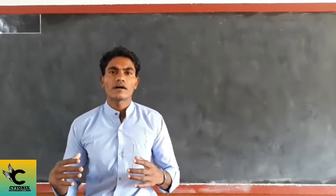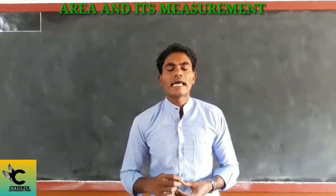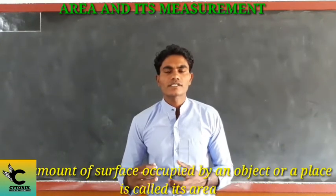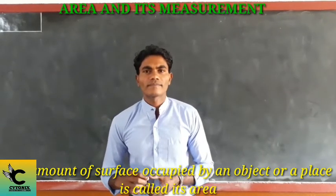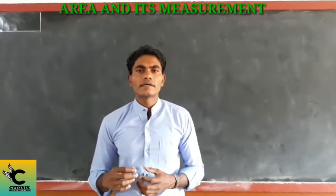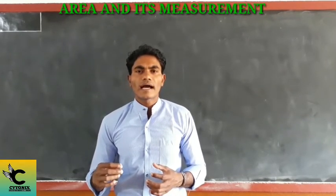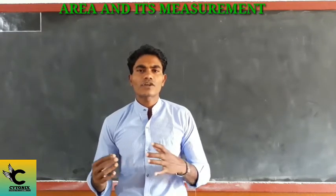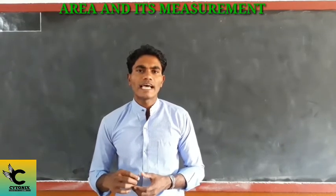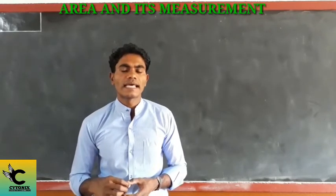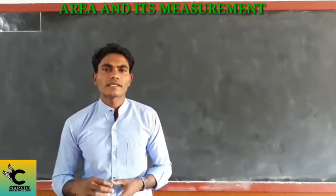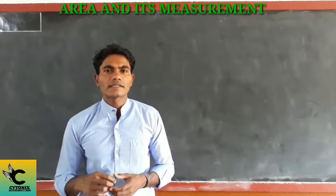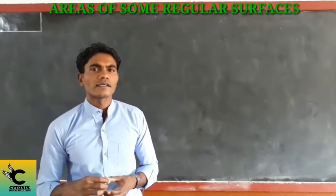Now we look at the unit of area. Area is the amount of space an object or place covers. For measuring area — how big something is — the standard units include square kilometers, hectares, and acres.